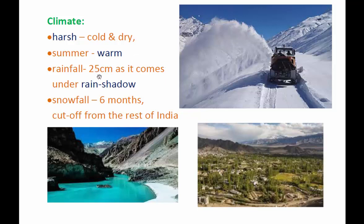The rainfall is very scanty in this region, same as the hot desert — only 25 centimeters. One of the reasons is that it comes under the rain shadow of the monsoon winds. When India receives monsoon rains, Ladakh falls just under the shadow and does not receive any rainfall.